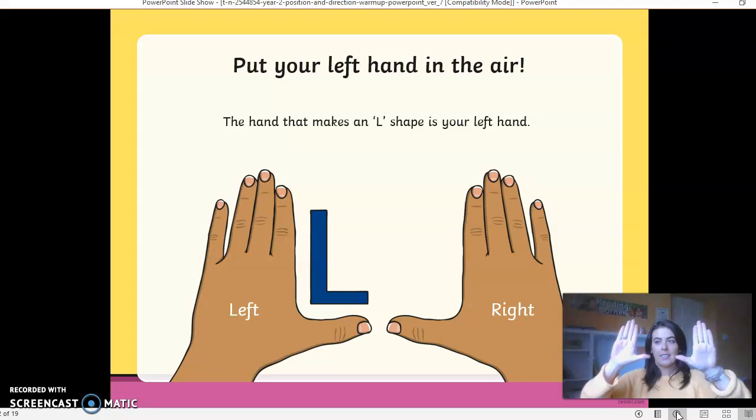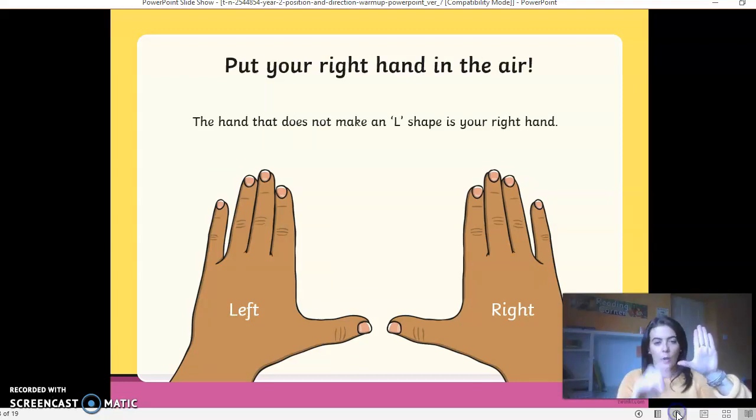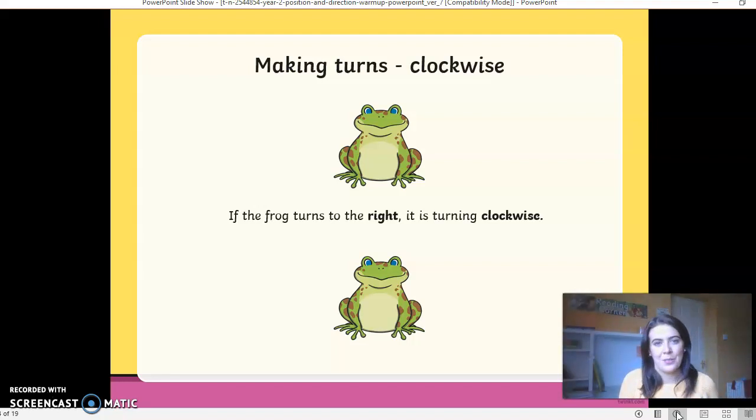Okay, so have a go at it there. See if you can identify which one is your left hand and your right hand. It's always the one that makes the capital L. And then of course, the hand that does not make the capital L is your right hand. So looking at it, this is a backwards L. So that is my right hand. So the one that makes the correct L is my left hand. So left, L for left.